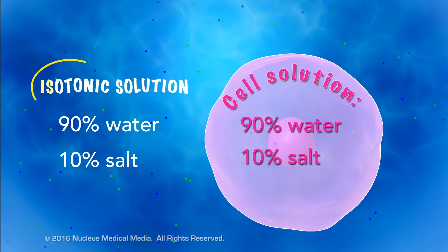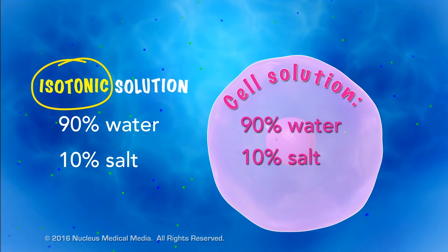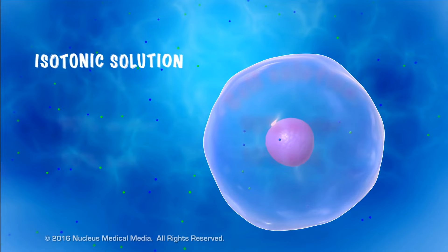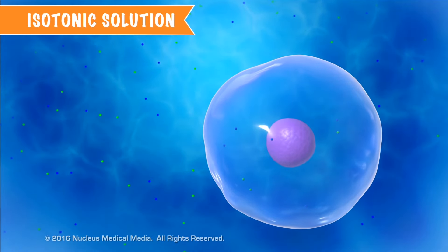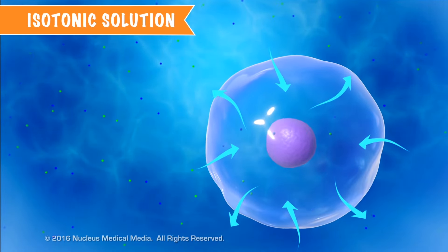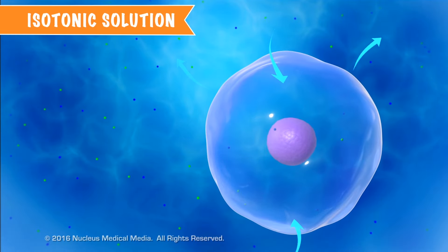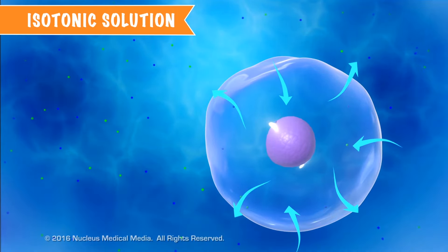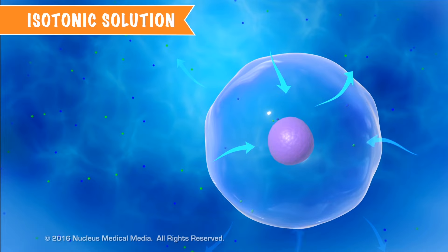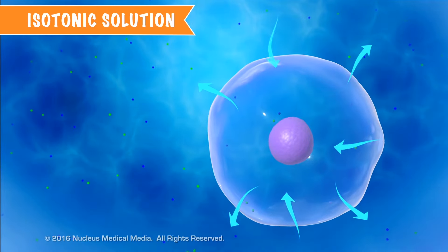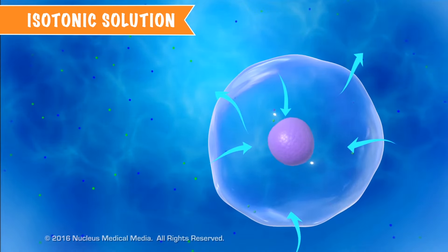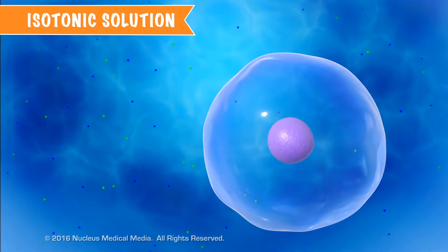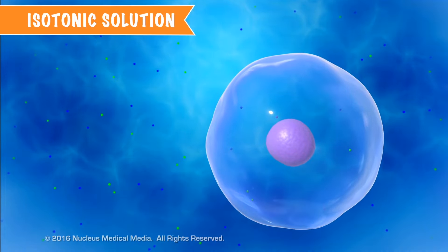We call a solution isotonic when its concentrations of water and solute are the same as inside the cell. But this doesn't mean that there is no movement. In an isotonic solution, the rate of water molecules entering the cell is equal to the rate of water molecules exiting the cell — that's why you see the arrows pointing in two different directions. In an isotonic solution, the cell doesn't shrink or swell; it stays exactly the same size.